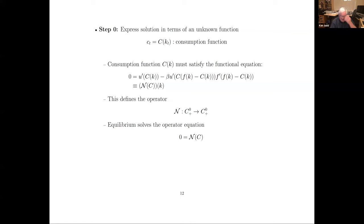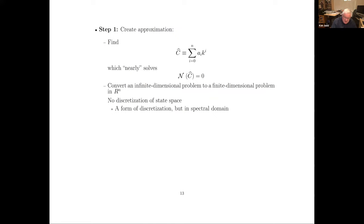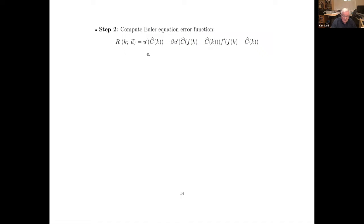The operator says: find the C such that N of C equals zero. Sometimes thinking in this operator way seems clumsy, but that is the key thing — you have to think about it as an operator. You're trying to find unknown functions, and the definition of equilibrium is to find some value for the unknown functions such that the operator maps it to zero. What we're going to do is approximate C-hat as a degree n polynomial. We're going to try to find coefficients a that do a good job of mapping C-hat to nearly the zero function.